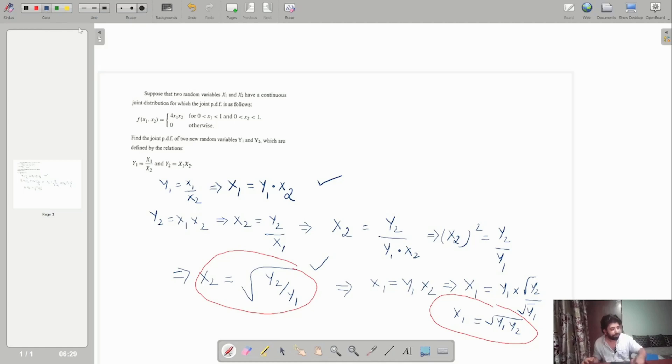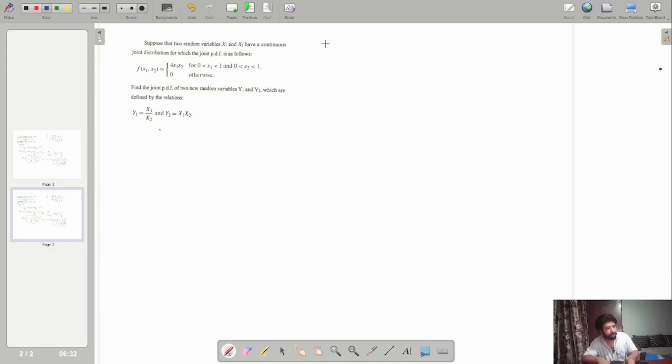Now we will proceed further. The next thing is we have to find out the Jacobian of the transformation here. We had x1 as square root of y1 y2 and then x2 as square root of y2 by y1. Once we differentiate ∂x1/∂y1, we will have square root y2 here and we will have 1 over 2y1, which will give me 1 over 2 square root of y2 over y1.